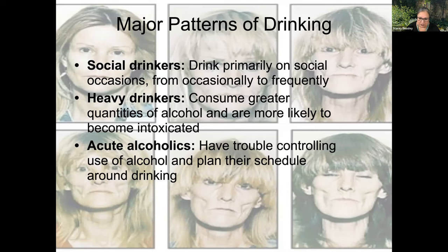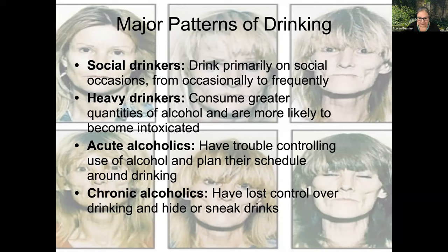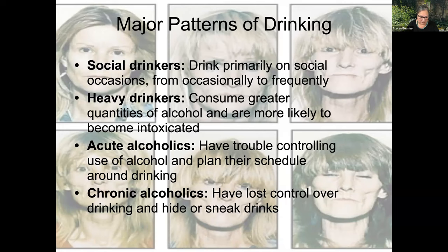Acute alcoholics have trouble controlling their use of alcohol — they don't have the ability to schedule around drinking or say two drinks is enough before driving. Chronic alcoholics have a loss of control over drinking and sometimes hide or sneak drinks from their families, because over time, heavy drinking creates issues within the family between family members, friendships, or relationships with significant others. That's where the hiding and sneaking come into play.